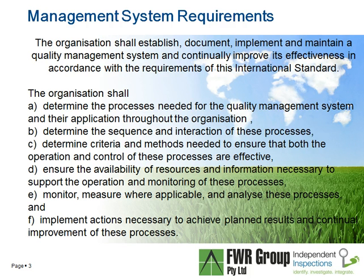There are four critical areas where a management system can fail: audits, management review, document control, and corrective action. These are the four key areas you need to look at, and they all dovetail together.